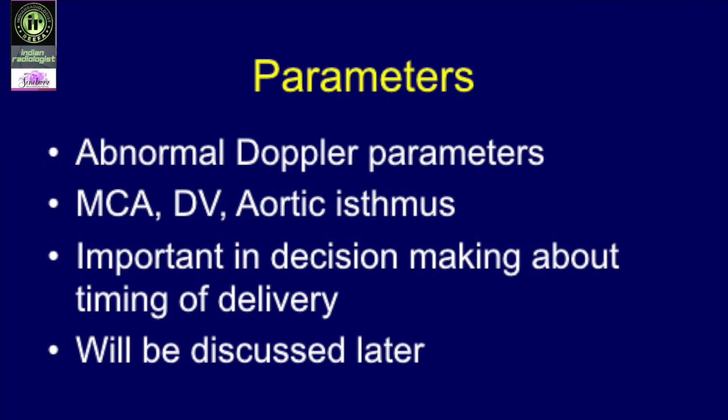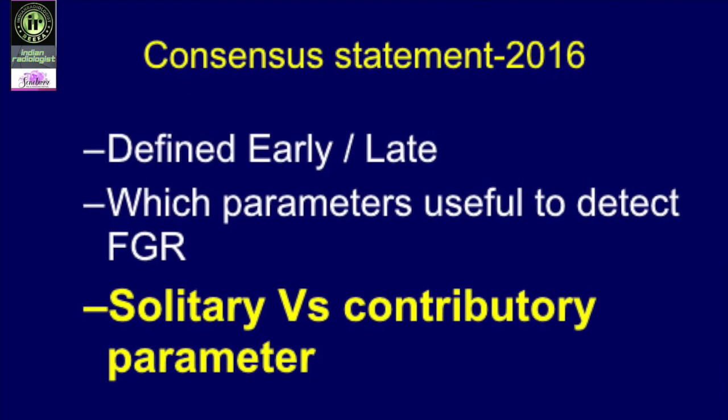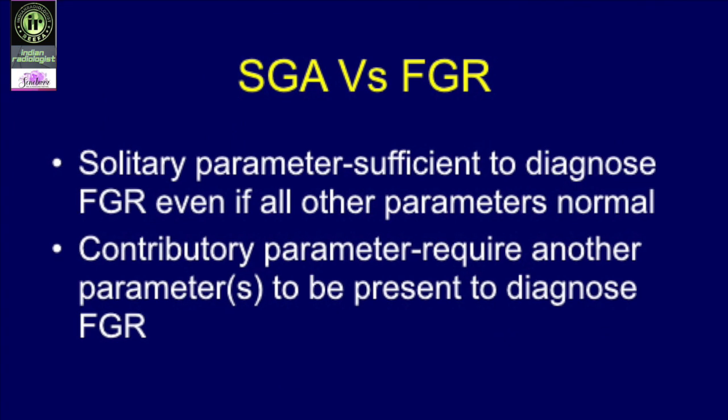A solitary parameter is a single parameter sufficient to diagnose FGR even when all other parameters are normal. A contributory parameter requires another parameter to also be present to diagnose FGR. We stick to umbilical artery, uterine artery, and CPR for defining FGR versus SGA.